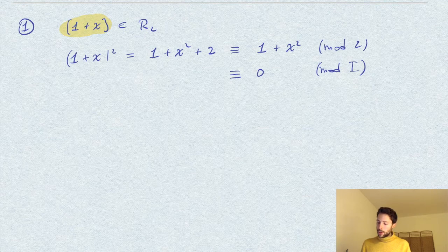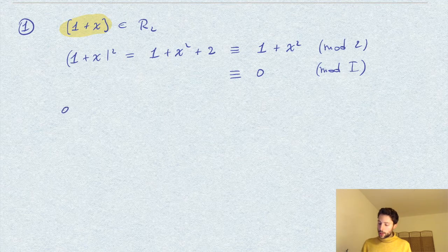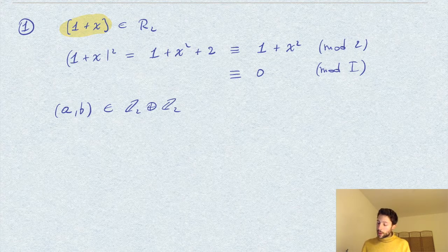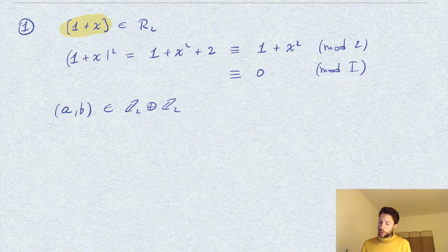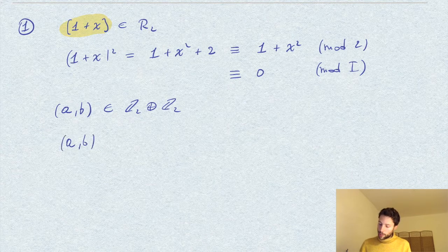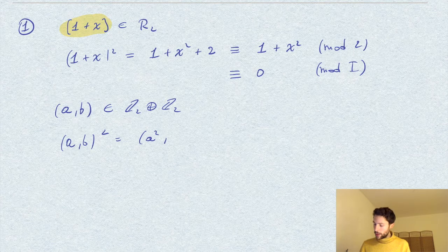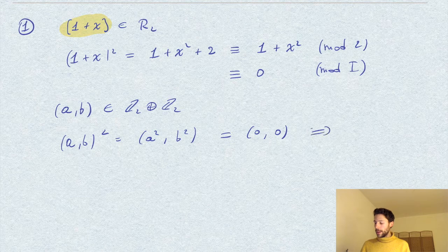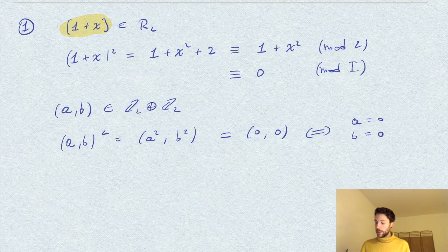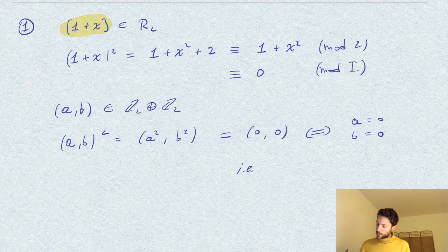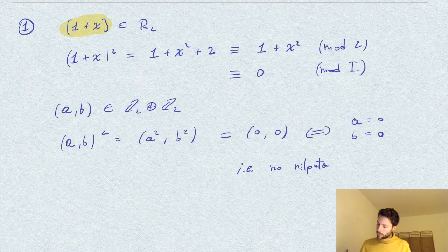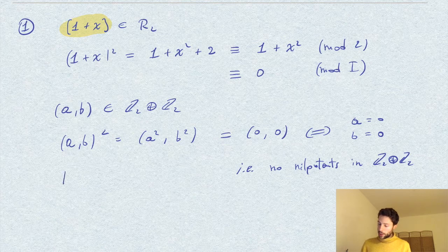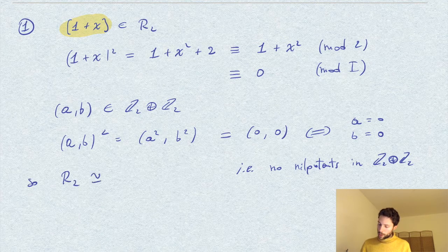Then we can use this to observe that R_2 is not isomorphic to two copies of Z_2, because an element (a,b) in the ring Z_2 plus Z_2, then what happens if we square it? So I want to prove that there are no nilpotents in Z_2 times Z_2. Well, (a,b) squared, which is just (a squared, b squared). Suppose this is 0 in this ring, so the element is (0,0), but this then implies that a is 0 and b is 0. In other words, that the element is 0. So there are no nilpotents in this ring. This shows already that R_2 is not isomorphic to this ring.